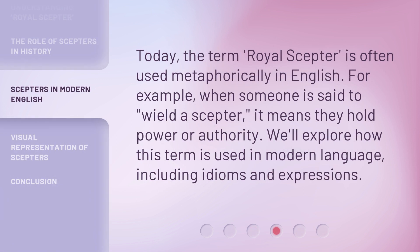Today, the term 'Royal Scepter' is often used metaphorically in English. For example, when someone is said to wield a scepter, it means they hold power or authority. We'll explore how this term is used in modern language, including idioms and expressions.